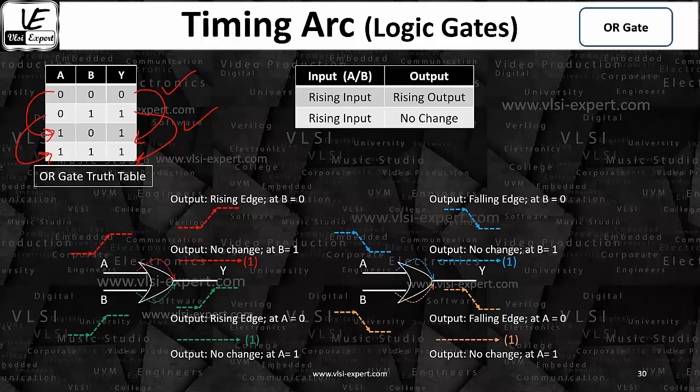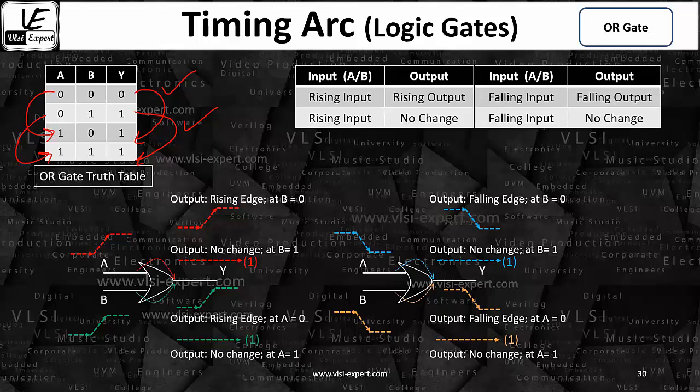I can summarize this in this way: rising input gives rising output, or rising input gives no change. Falling input gives falling output, or falling input gives no change. So that means this is also a positive unate.